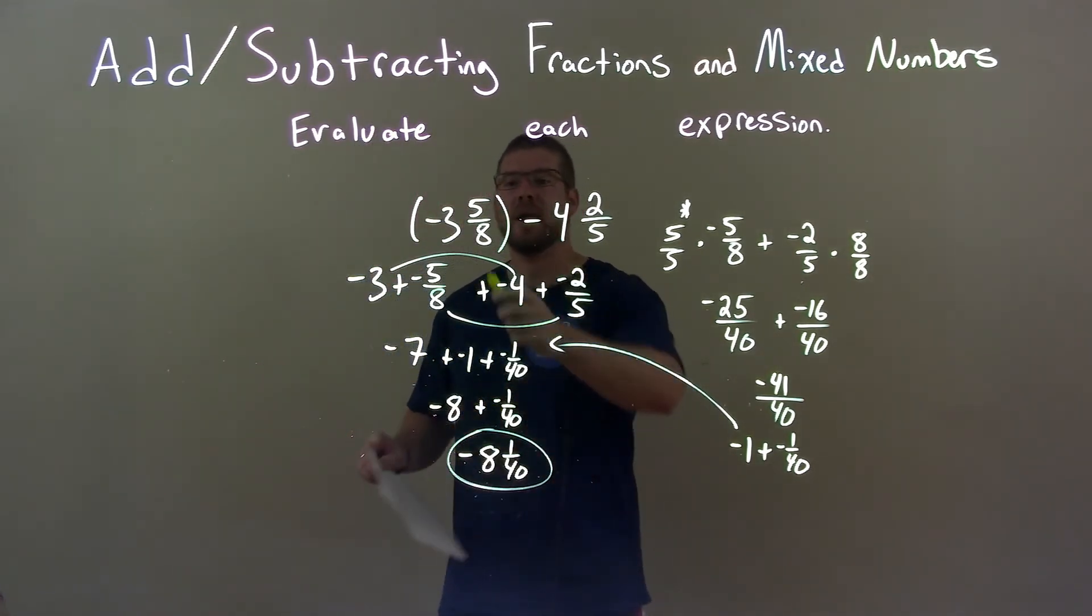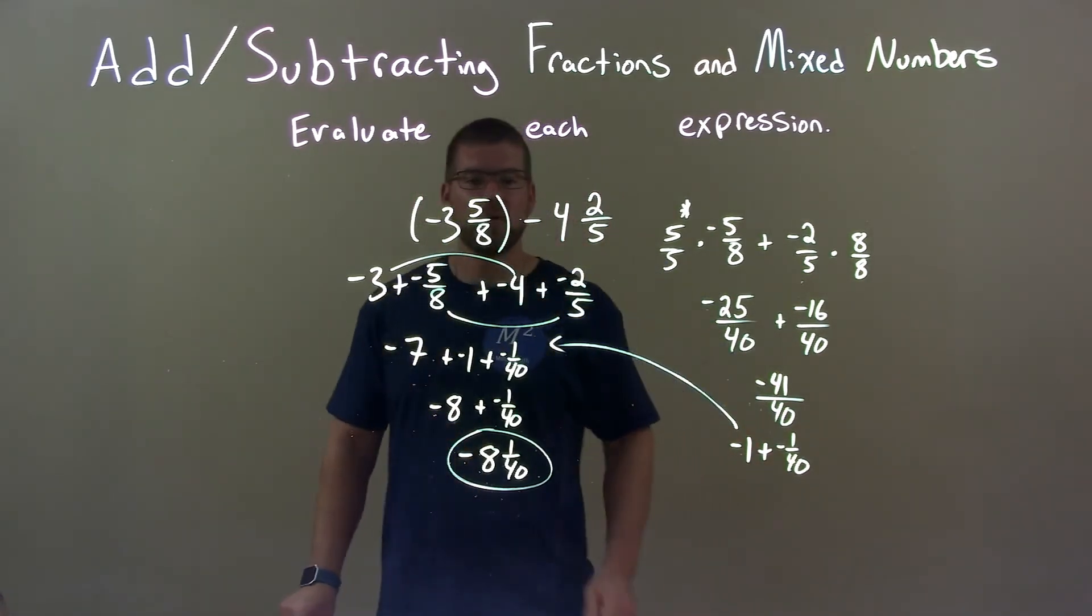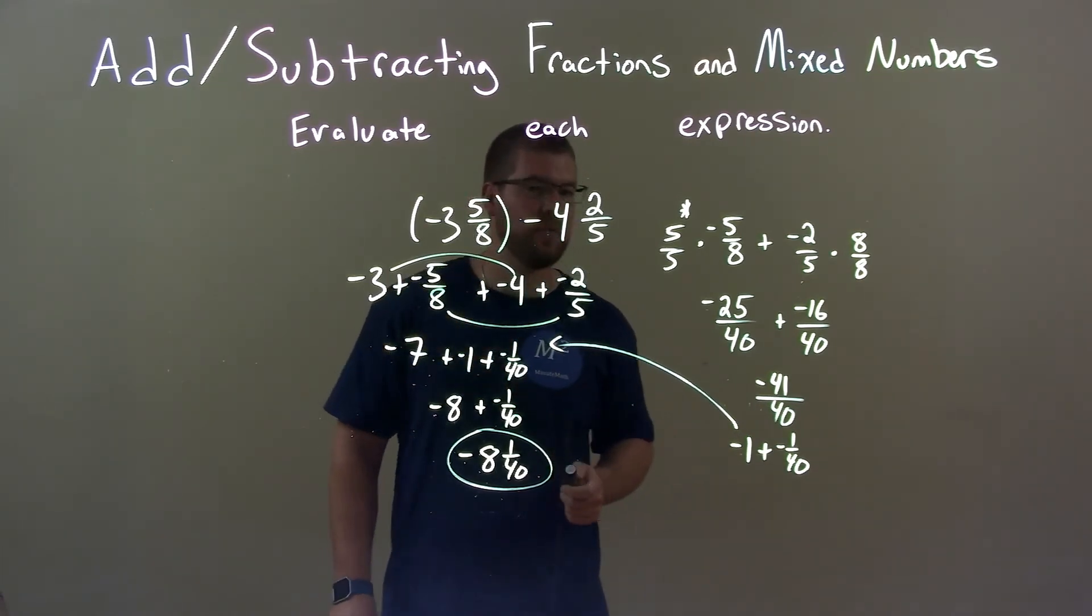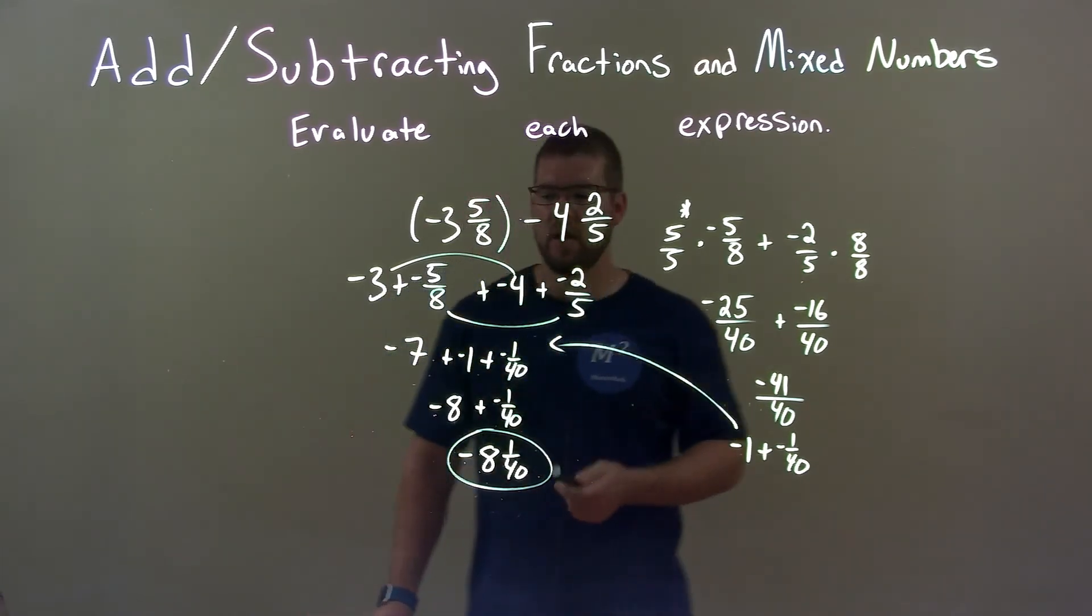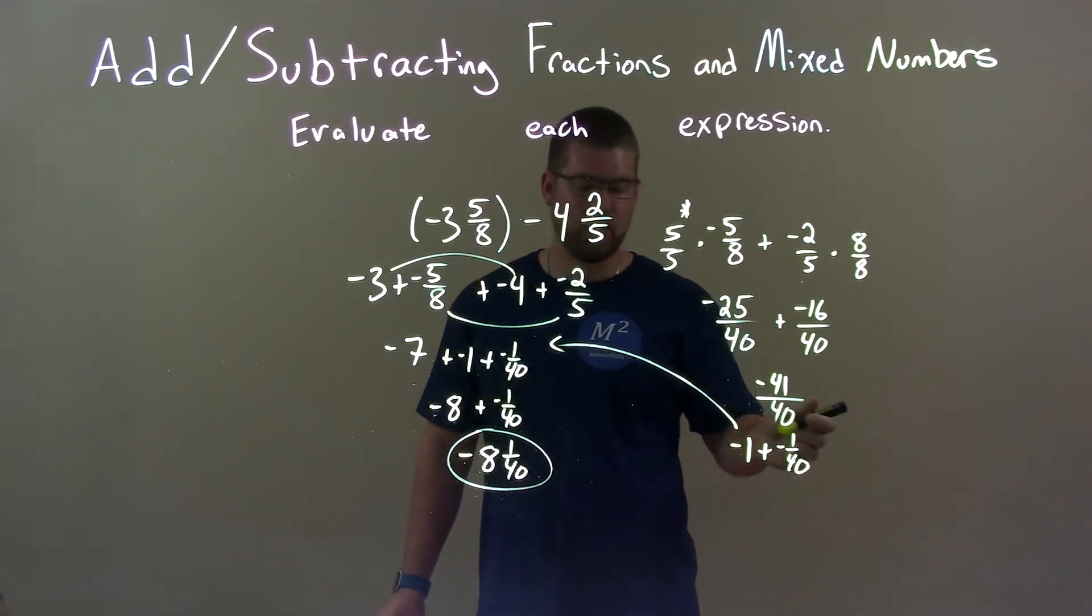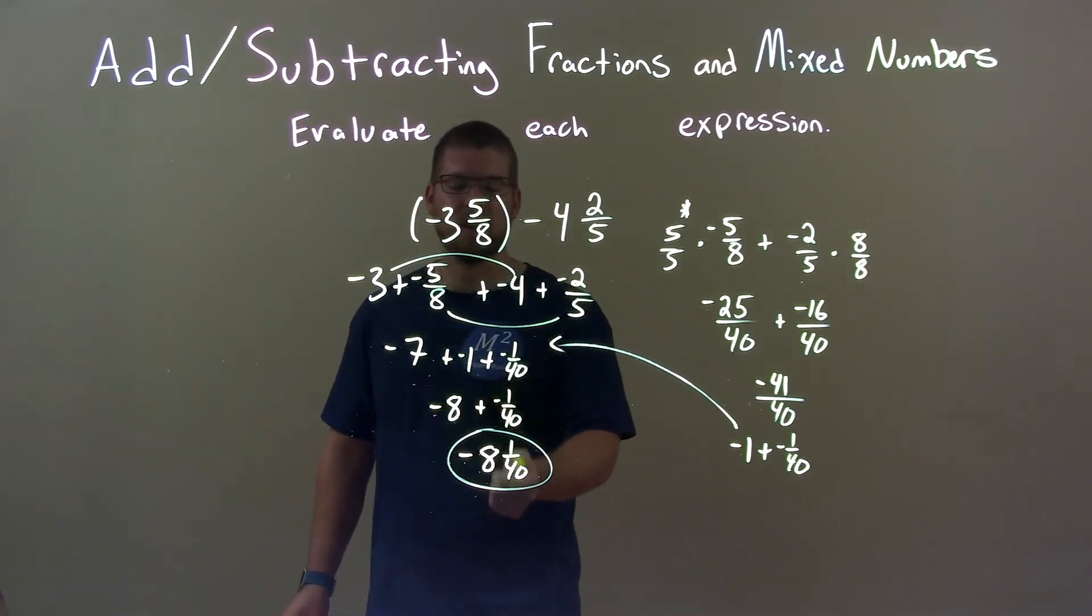So quick recap: we're given negative 3 and 5 eighths minus 4 and 2 fifths. Well first, I broke that down, then combined our whole numbers and our fractions. Broke it down to be whole numbers and fractions. Whole numbers added to be negative 7, and our fractions came out to be negative 1 and negative 1 over 40. Brought that over here. Again, combine the whole numbers, then added the fraction in there to get a final answer of negative 8 and 1 over 40.